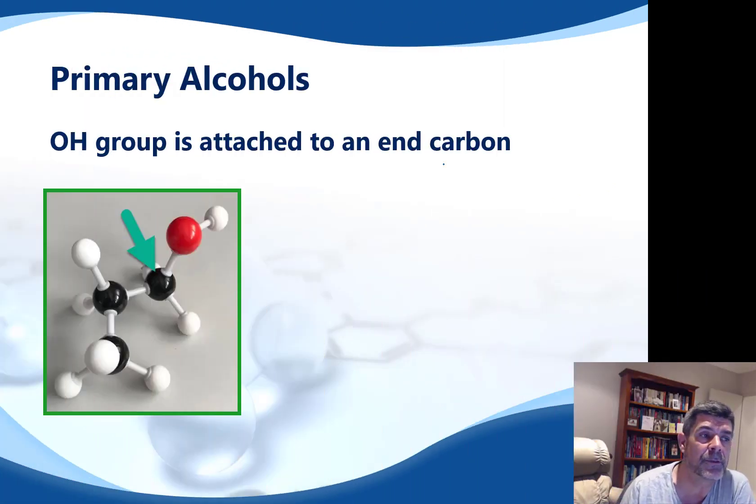The first group are the primary alcohols. And the primary alcohols are the ones where the OH group is attached to an end carbon. One of the ways we want to try and remember this is from the end carbon, there can only be one other carbon. In fact, in some cases, if we look at methanol, there is no other carbon attached to that carbon, but only one other carbon can be attached, or just hydrogens, for our primary alcohols.